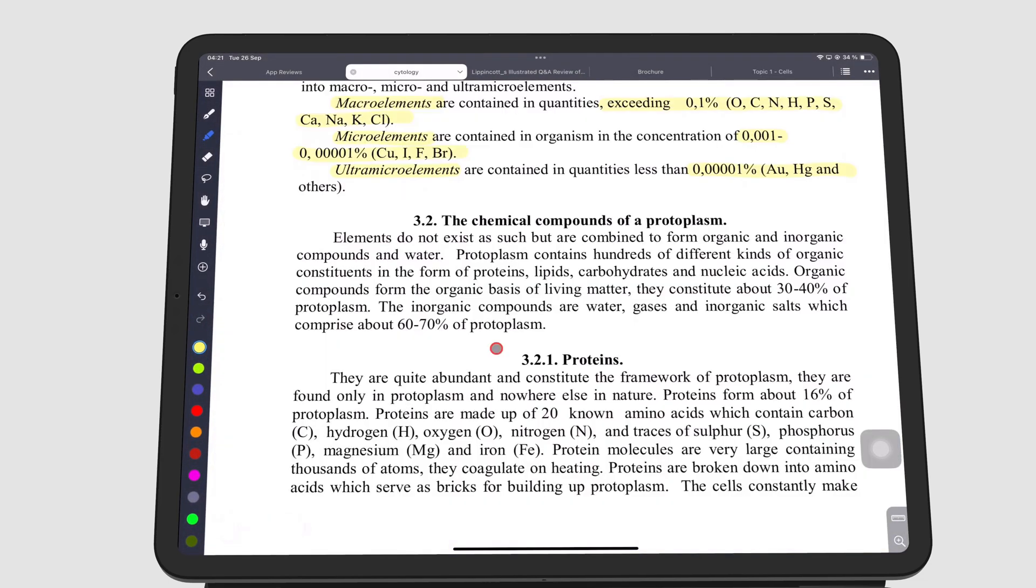When reading your PDF, you can long press the text to highlight. And the app will highlight it with a yellow highlighter.